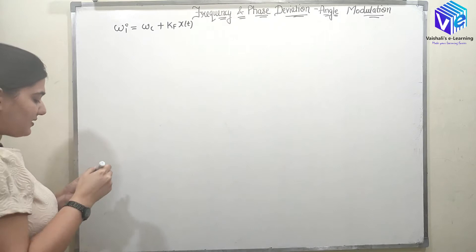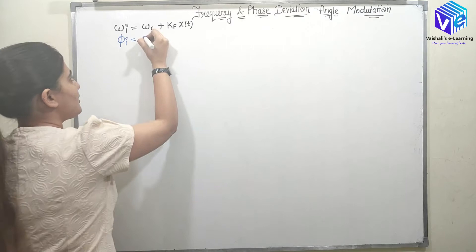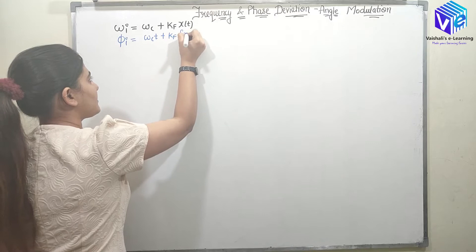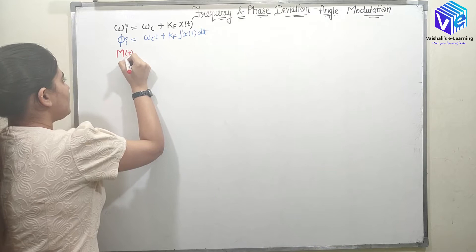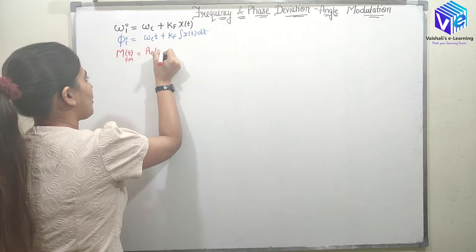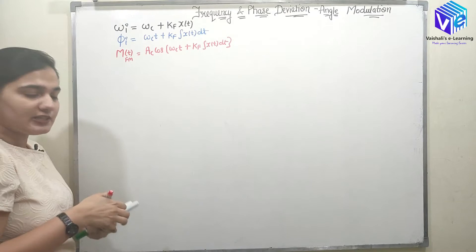We can find out the instantaneous phase — phi instantaneous was the integration of the instantaneous frequency, so it was equal to omega_c*t plus k_f times the integration of x(t) dt. We also discussed frequency modulation, where the modulated signal m(t) in the FM domain was represented as A_c cos(omega_c*t plus k_f times the integration of x(t) dt).